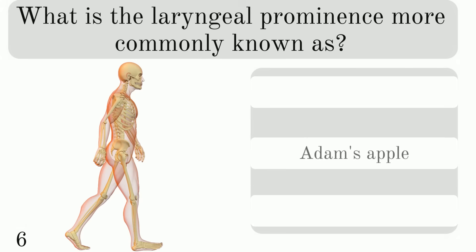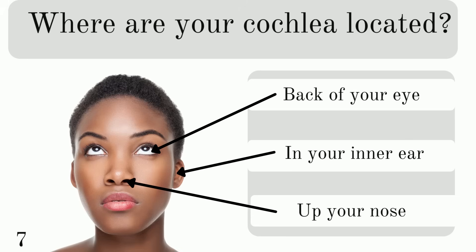What is the laryngeal prominence more commonly known as? Is it the armpit, Adam's apple, or nose? It is Adam's apple. Where are your cochlea located? Are they in the back of your eye, your inner ear, or up your nose?